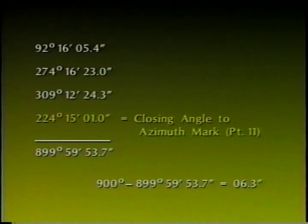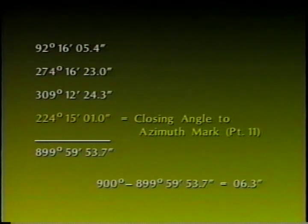The first step in the computation of traverse station coordinates is balancing the angles. The formula for determining angular error of closure when the external angles have been observed is, as we reviewed, the number of sides in the figure plus two times 180 degrees. The sum of the external angles in our example should be 900 degrees. From the field data, we observed that the angular error of closure is 6.3 seconds.